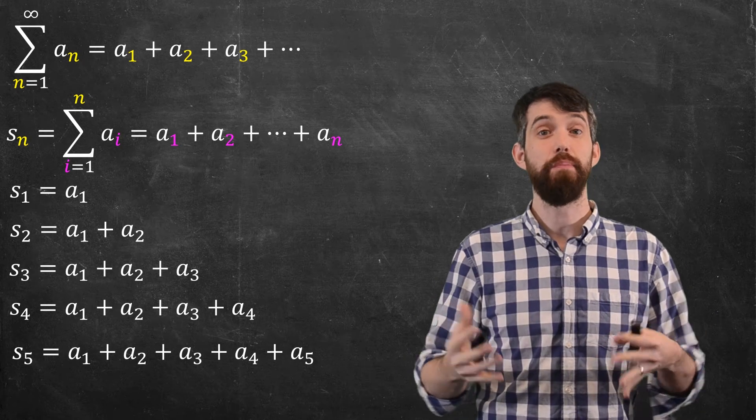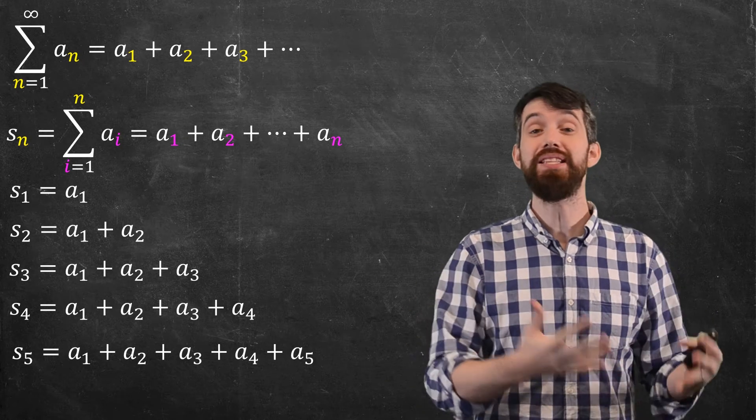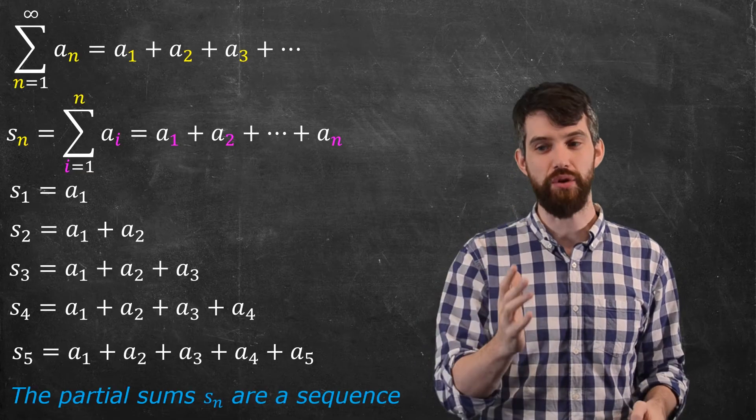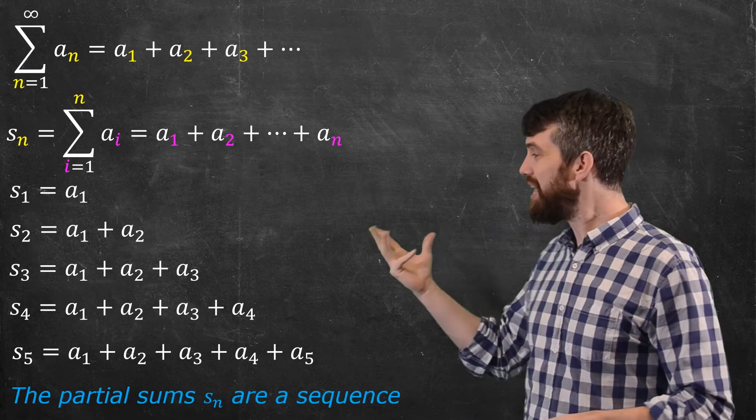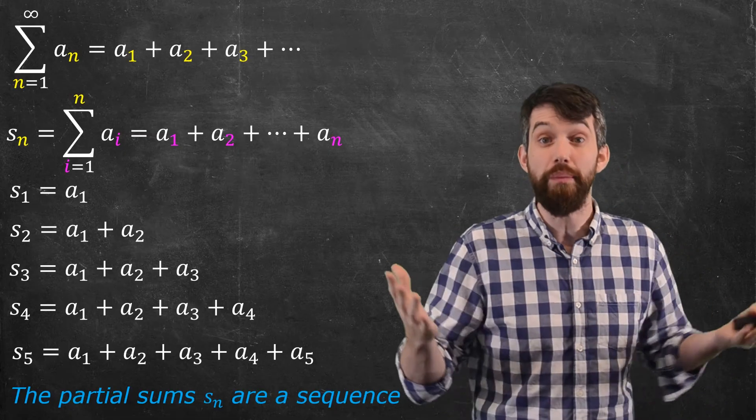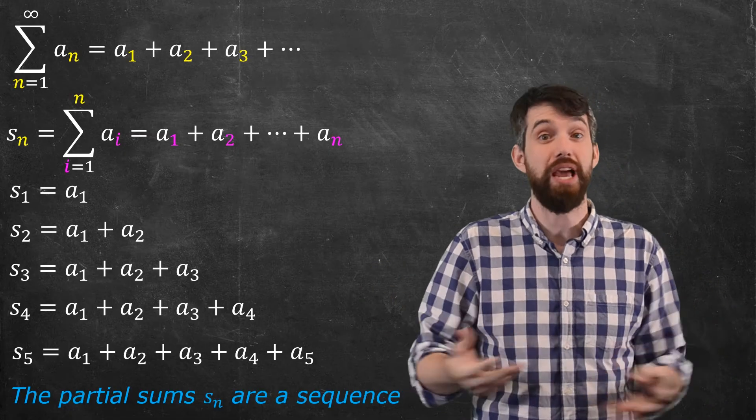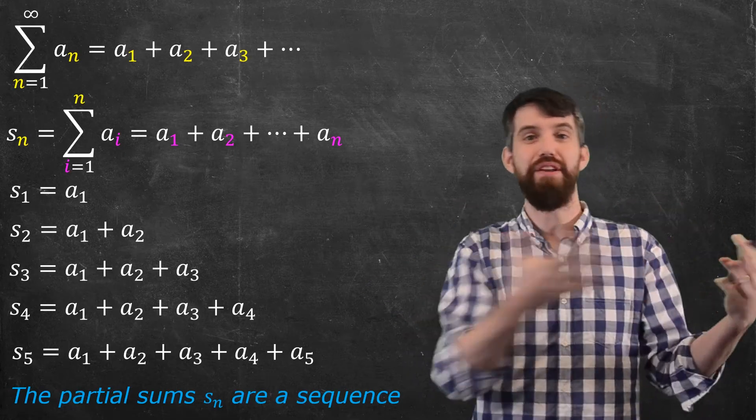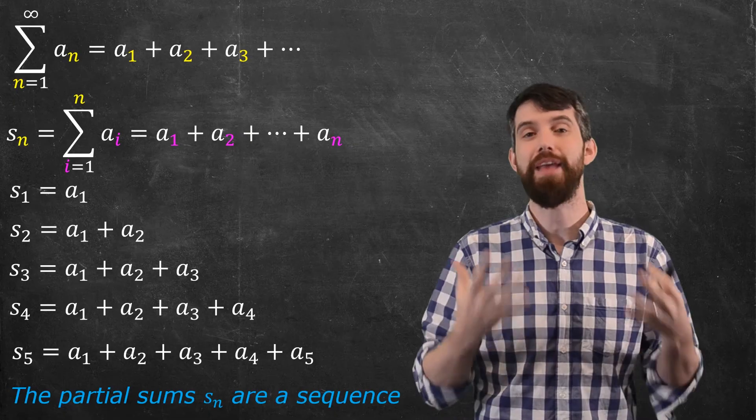Now, the real point here is that these partial sums, the s sub n, that is not a series, it is a sequence. Indeed, for any one of these individual s sub n's, it is just some number. You add up n terms together, you get some number. So, for every natural number that we have, we have a value out for this partial sum. That's what we're talking about.